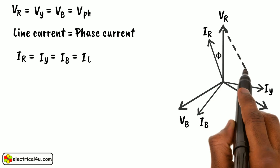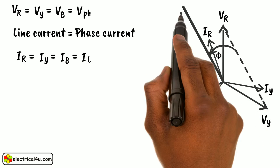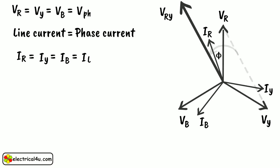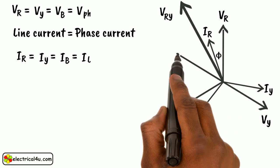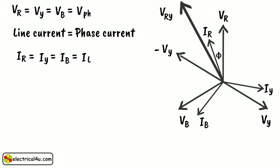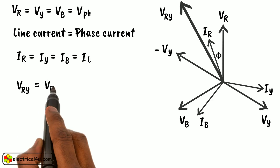Now let us say voltage across R and Y terminal of the star-connected circuit is VRY. Let us draw minus VY in just opposite direction of VY. From the diagram it is found that VRY equals VR plus, within bracket, minus VY.